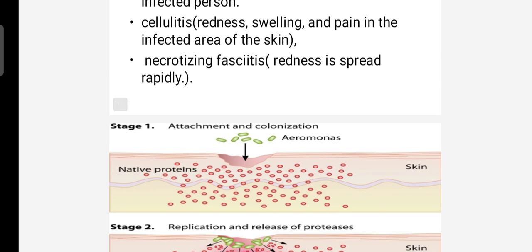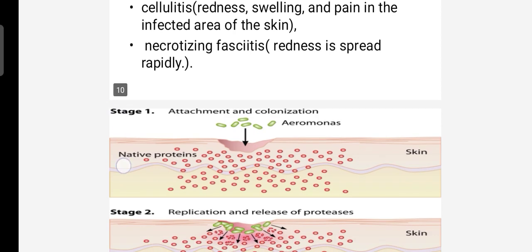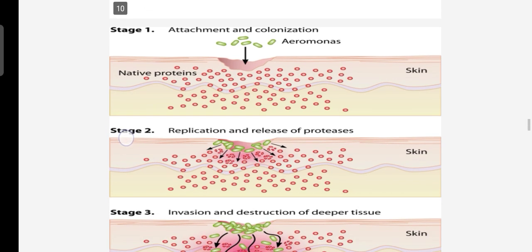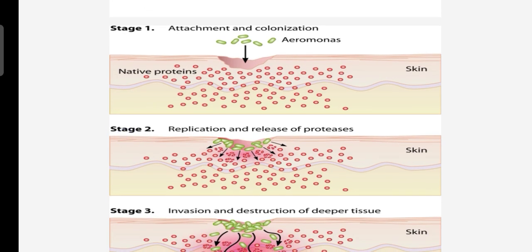The pathogenesis includes necrotizing fasciitis. You can see how the bacteria spread. This is an animated picture in which you can see briefly how Aeromonas causes infection.